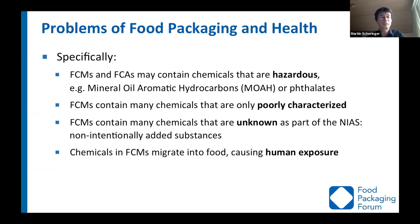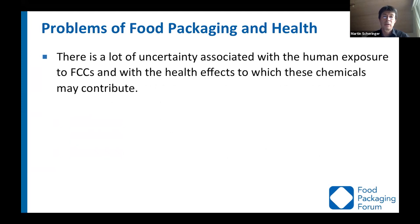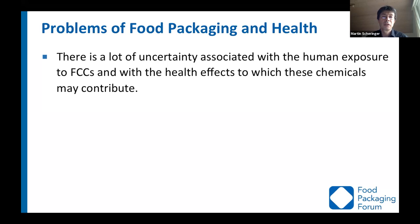Overall, we do know that chemicals from food contact materials migrate into food, and they are then taken up by humans who eat the food, causing human exposure and potentially contributing to human health effects. There is a lot of uncertainty associated with human exposure to food contact chemicals and the health effects to which they may contribute. In many cases we only have bits and pieces of the picture. One of the main questions for the FPF's work is: how can this uncertainty be reduced? The first step is to better understand, evaluate, and characterize all the chemicals present in food contact materials and food contact articles.